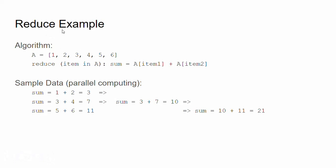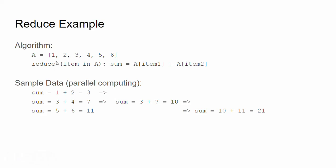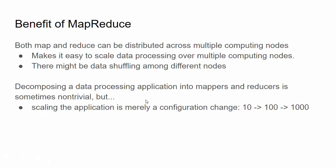For Reduce, if we want to sum items 1 through 6 serially — 1+2, result+3, result+4, result+5, result+6 — that takes five steps. In a distributed environment, you break it into blocks: 1+2, 3+4, and 5+6 are computed in parallel in one step, then you aggregate those results again and again. Instead of five serial clock cycles, you do it in three parallel clocks. This is how distributed calculation reduces processing time.